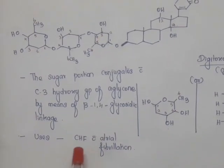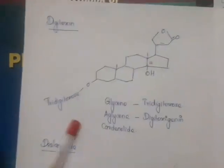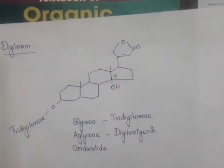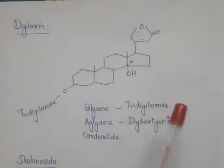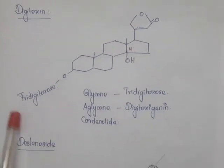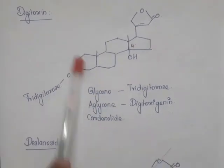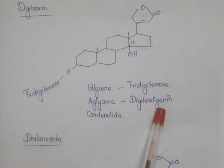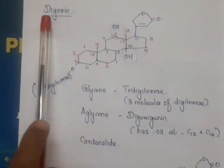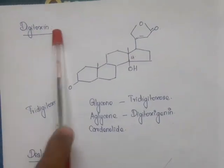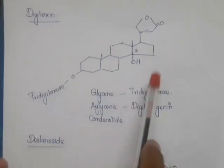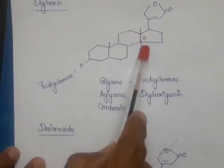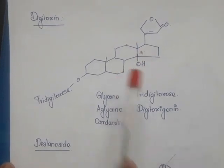Digoxin is used in the treatment of congestive heart failure with atrial fibrillation. Now, digitoxin differs from digoxin in that digoxin has two hydroxy groups at C12 and C14, whereas digitoxin has only one hydroxy group at C14. The sugar is the same — tridigitoxose (three molecules of digitoxose). The aglycone of digitoxin is called digitoxigenin.